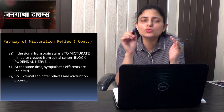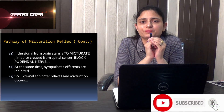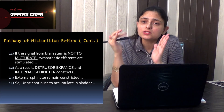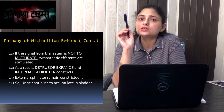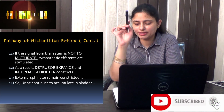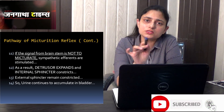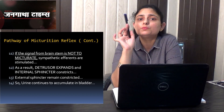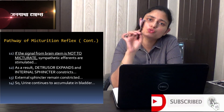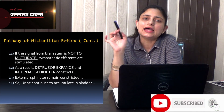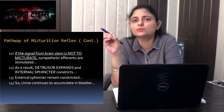The detrusor muscle contracts and pushes the urine downward. On the other hand, if the higher center says not to micturate, the sympathetic efferents get stimulated — the external urethral sphincter will not open, the detrusor muscle will relax, and the internal urethral sphincter will close, so one will not be able to micturate.